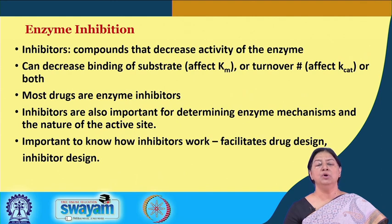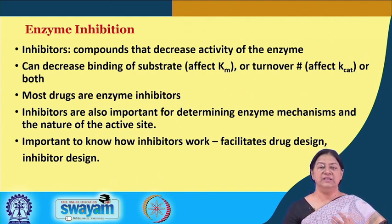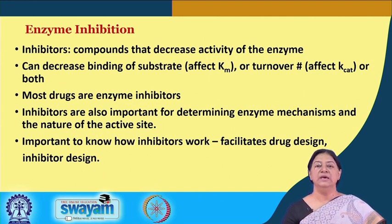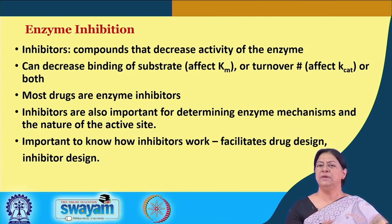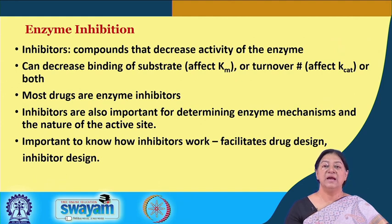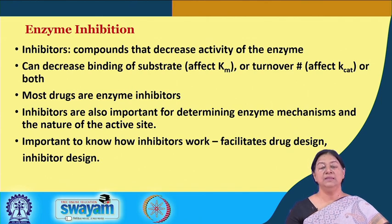In inhibitor design, if we know the substrate and the active site and want to inhibit the enzyme activity, we prepare an inhibitor that looks like the substrate — a substrate analog. It has shape or chemical complementarity with the substrate and will bind to the active site, but the reaction will not proceed because it is not the actual substrate.